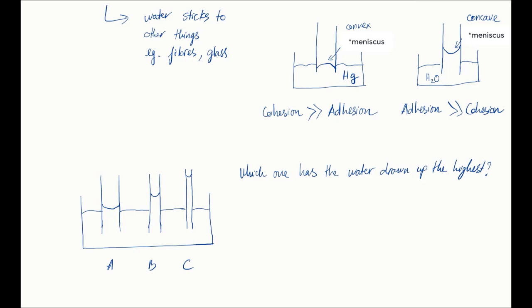Because the bigger the tube, the more cohesion there is within the water, whereas the increased surface area didn't create more adhesion at the same rate.